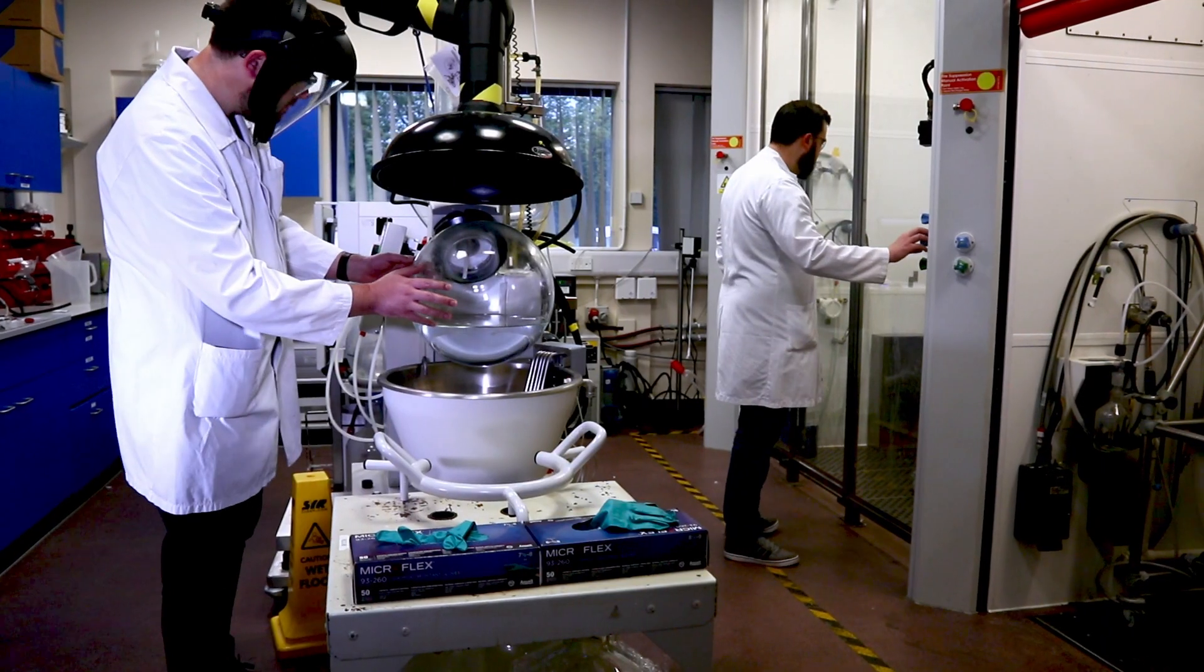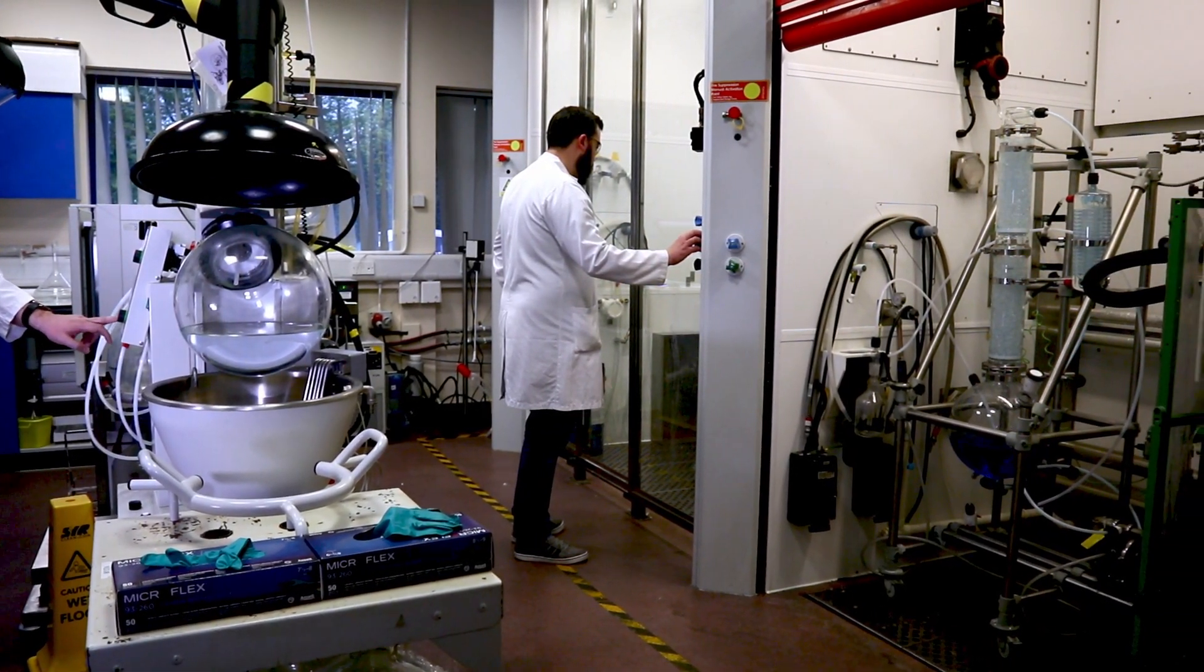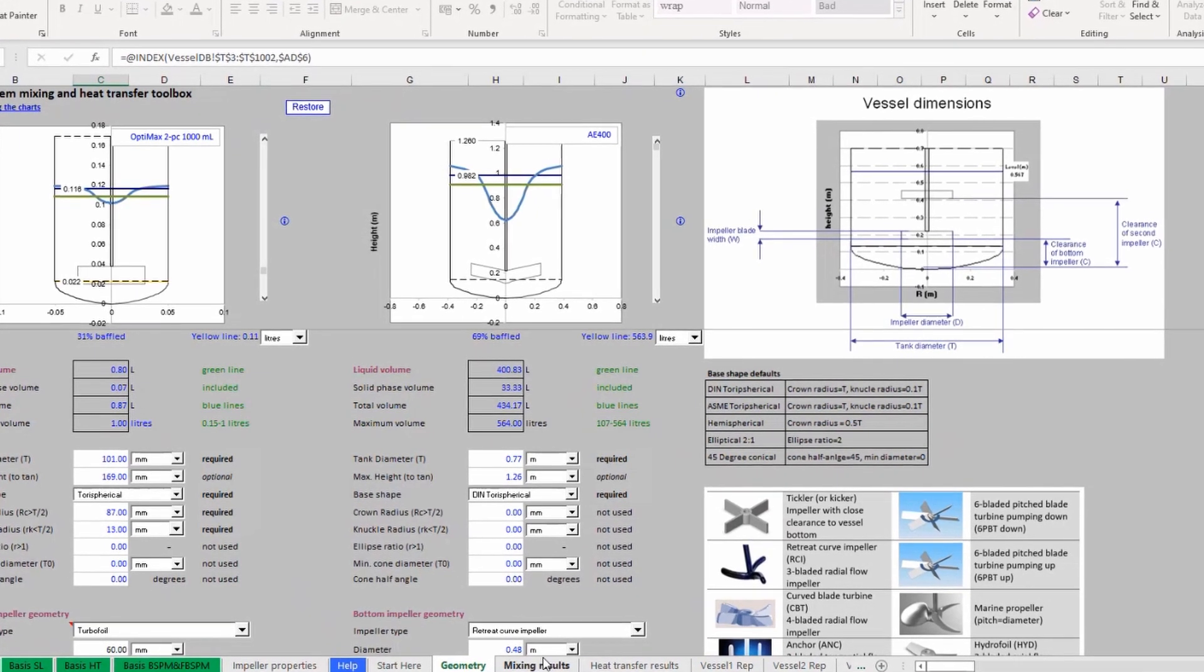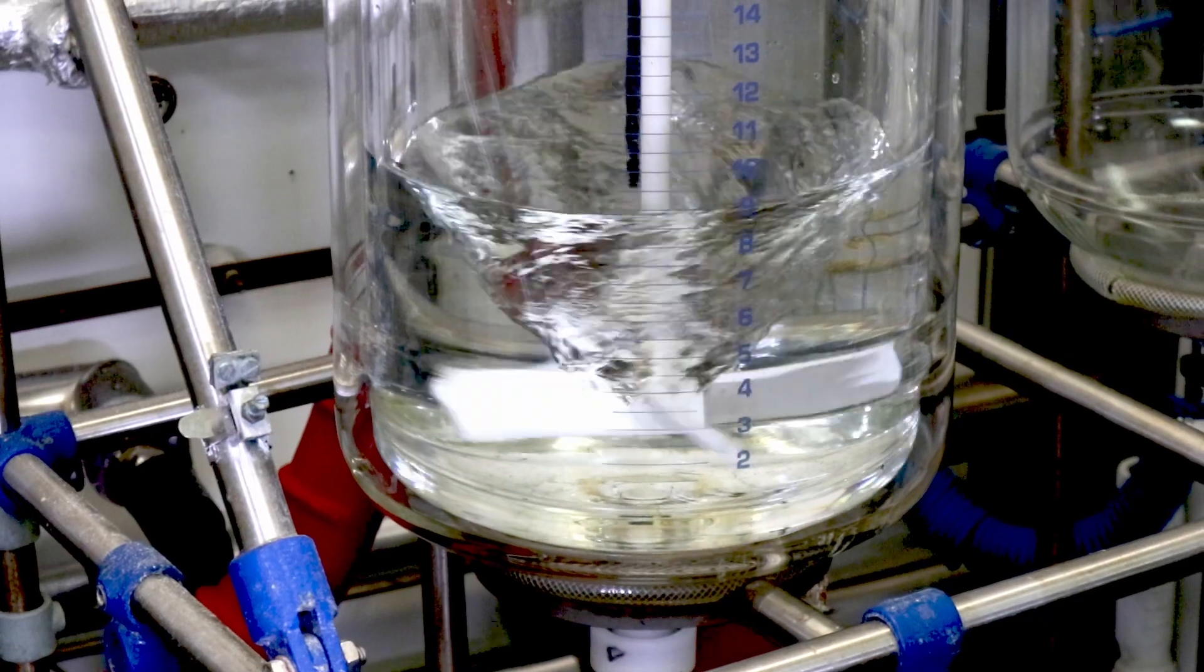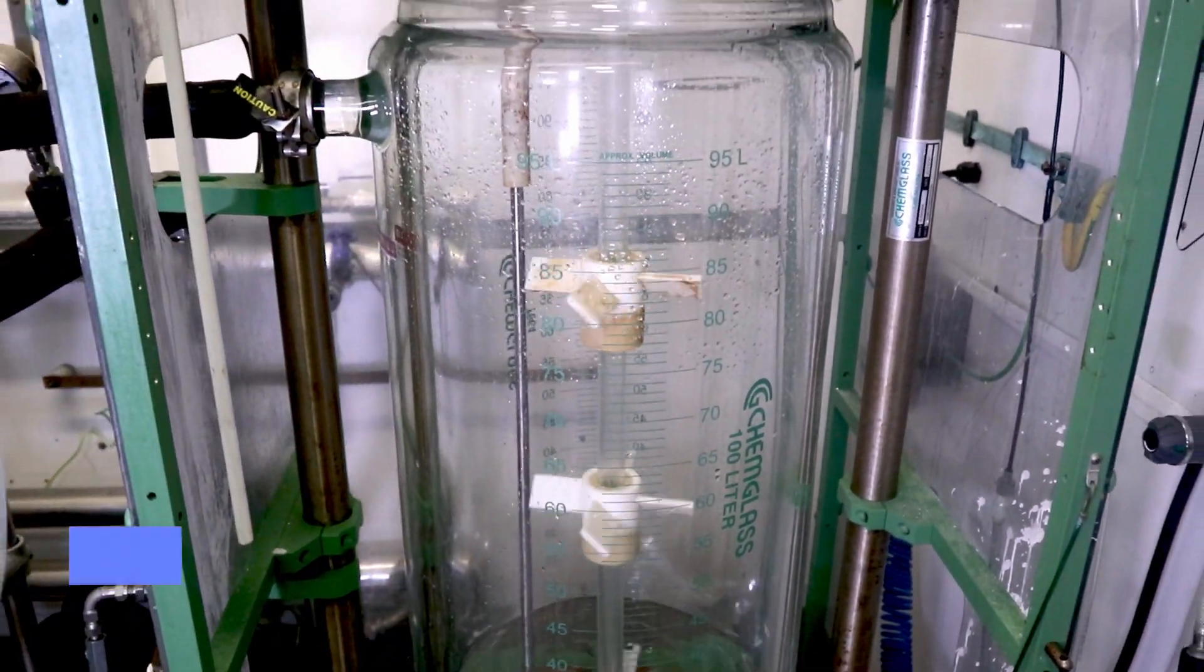The process is then demonstrated at up to a 100 liter scale in our Kilo laboratory. With the help of modeling tools such as Dynochem and Vizimix, we can transfer to another Viranova site for large scale and GMP manufacture.